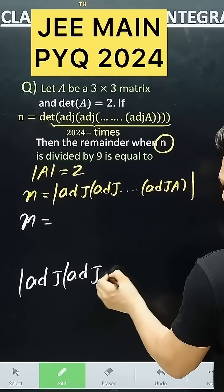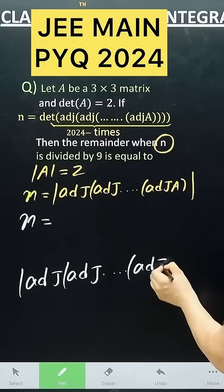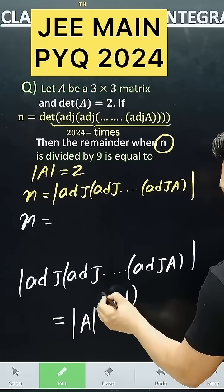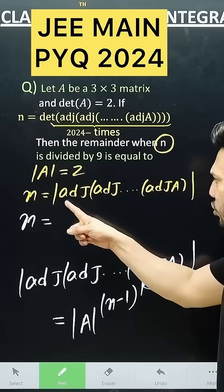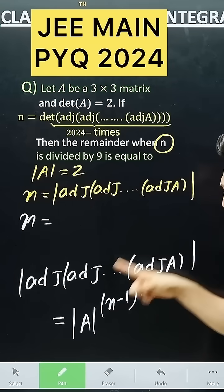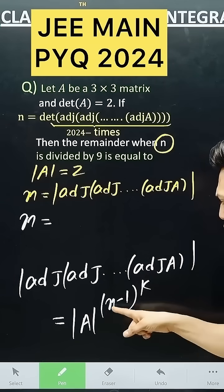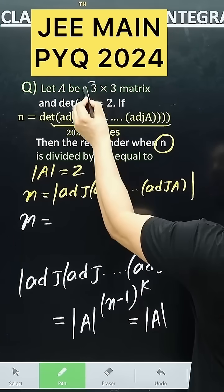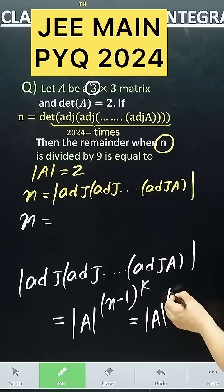Its direct formula is adjoint, adjoint A. Its direct formula is the determinant of A to the power n minus 1 to the power k. Here, what is n? n is the order. So n becomes 3 to 1 and k is k.